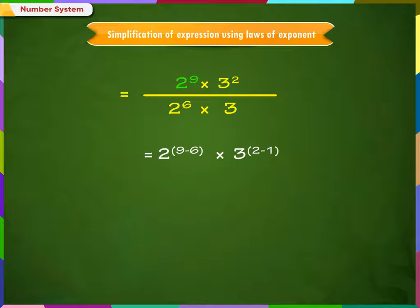Similarly, 3 raised to 2 by 3 raised to 1 becomes 3 raised to 1, which is 3. Now, we can simply expand the numbers and multiply. Thus, we get 24.